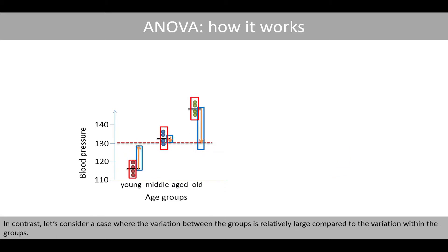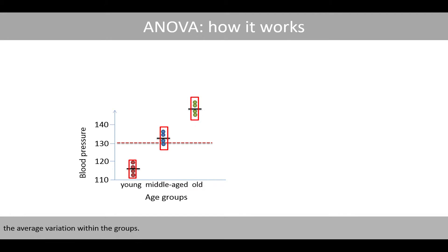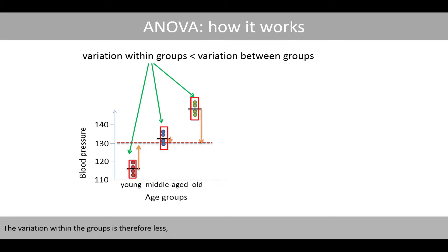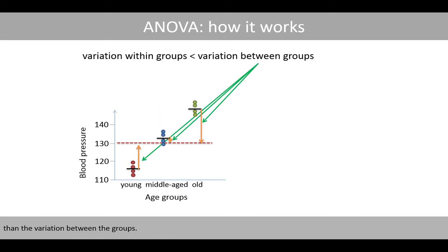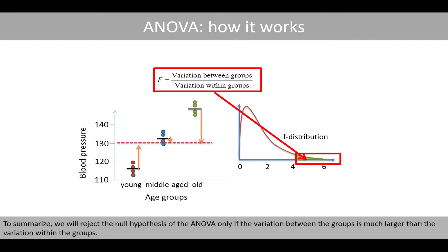In contrast, let's consider a case where the variation between the groups is relatively large compared to the variation within the groups. In this example, we see that the average variation of the group means around the grand mean is larger than the average variation within the groups. The variation within the groups is therefore less than the variation between the groups. In this example, the F-ratio will be greater than 4.26, which means that the p-value will be less than 0.05 and that we will reject the null hypothesis. To summarize, we will reject the null hypothesis of the ANOVA only if the variation between the groups is much larger than the variation within the groups.